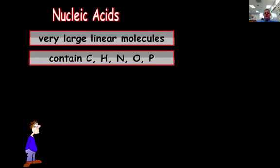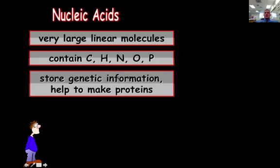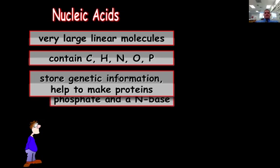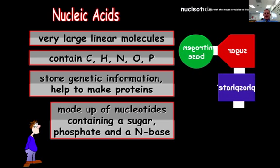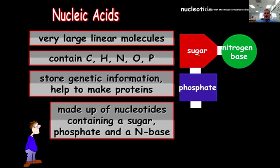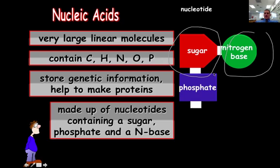And then the last molecule we're going to talk about are nucleic acids. These are very large linear molecules. They contain a C, a carbon, a hydrogen, a nitrogen, an oxygen, and phosphorus. Their main purpose is to store genetic information. They also help make proteins. They're made of what's called a nucleotide. A nucleotide is just another word for saying something with a sugar, a nitrogen base, and a phosphate. Those three things together make up what's called a nucleotide.